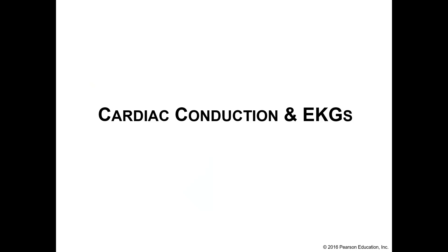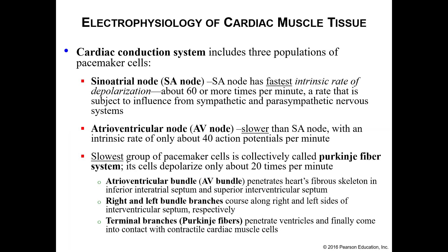This recording will discuss cardiac conduction and EKGs. Your cardiac conduction system is composed of certain populations of pacemaker cells. The three specific populations are: your sinoatrial node or SA node, your atrioventricular node or AV node, and the Purkinje fiber system, which includes the atrioventricular bundle, right and left bundle branches, and Purkinje fibers themselves.